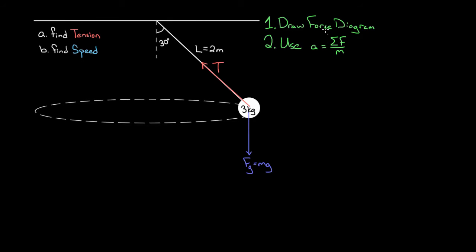Use Newton's second law for only one direction at a time. We typically have two directions: vertical or horizontal. If you pick the wrong direction, it just means you can't solve because there will be too many variables — but what you write will probably be useful later, so don't erase it. Just go to the other direction. The worst thing you can do is freeze up; you've got to try something.